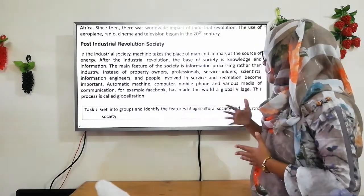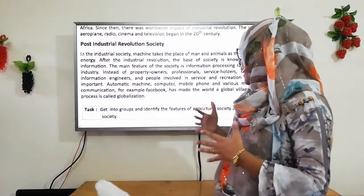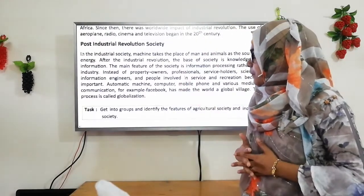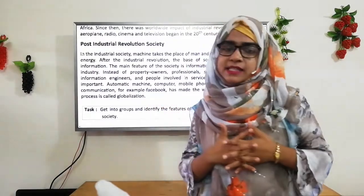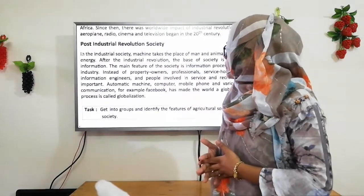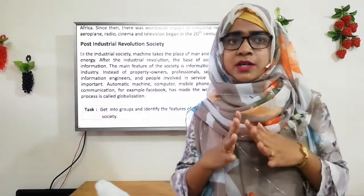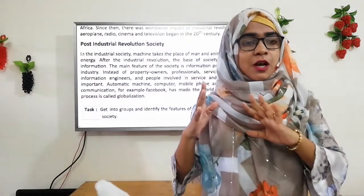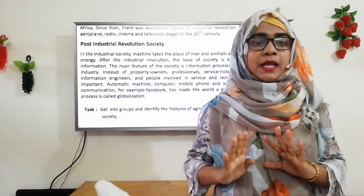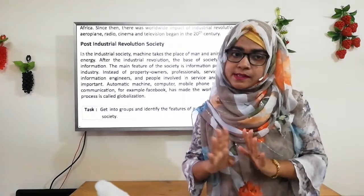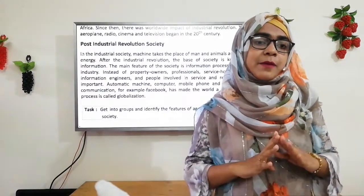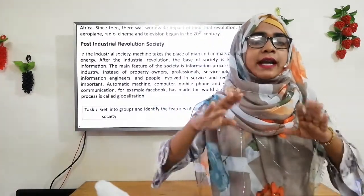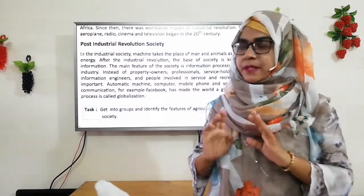Automatic machines, computers, mobile phones, and various media of communication — for example, Facebook — have made the world a global village. This process is called globalization. The main features of the post-industrial society are: first, the economy transforms from the production of goods to the provision of services; second, the emergence of a knowledge, elite, and professional middle class; and third, knowledge and technical skills become a valued form of capital.